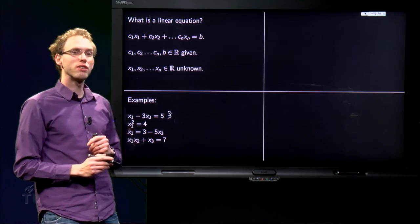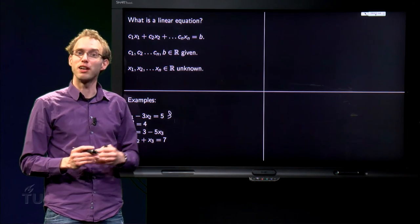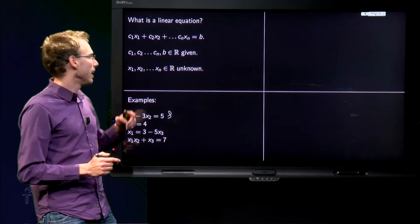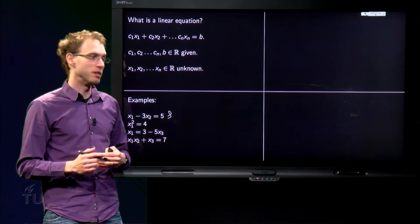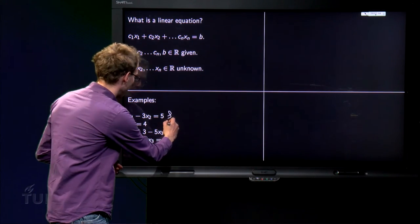Then X1 squared equals 4, it does not seem very complicated, however, X1 is squared, so it is not linear in X1, which means that this is not a linear equation.